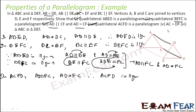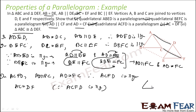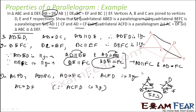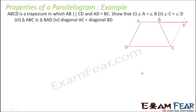Since ACFD is a parallelogram, AC equals DF. Now for triangle ABC congruent to triangle DEF: AB equals DE (given), BC equals EF (given), and AC equals DF (just proved). Therefore by SSS, the two triangles are congruent.